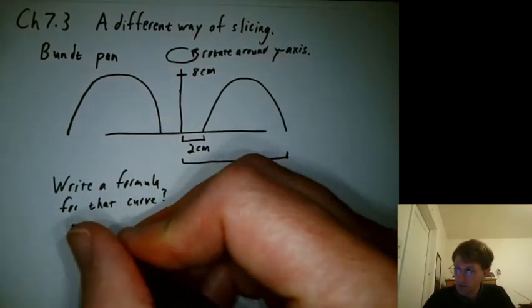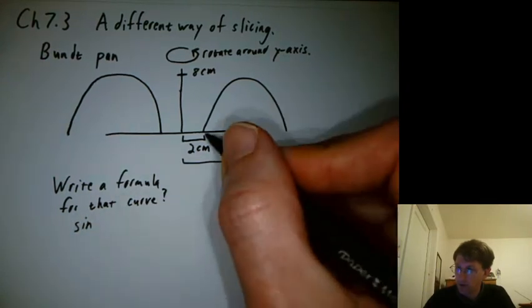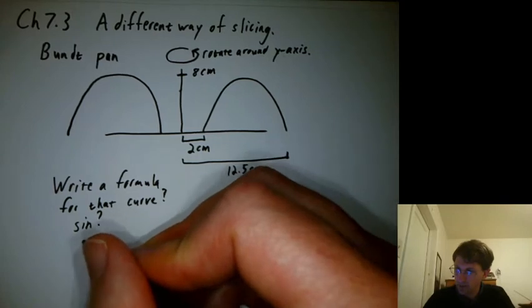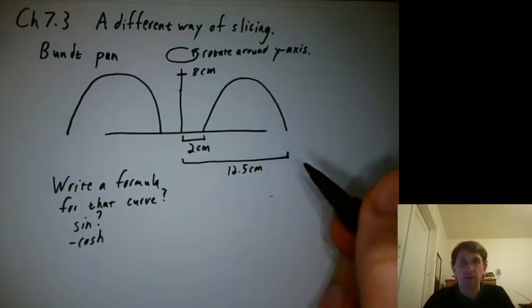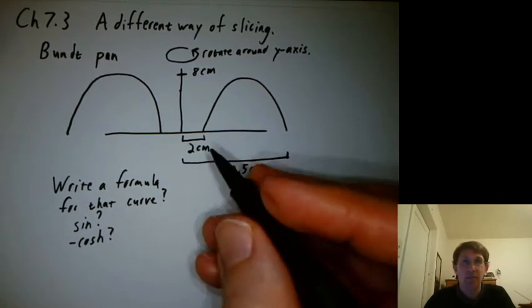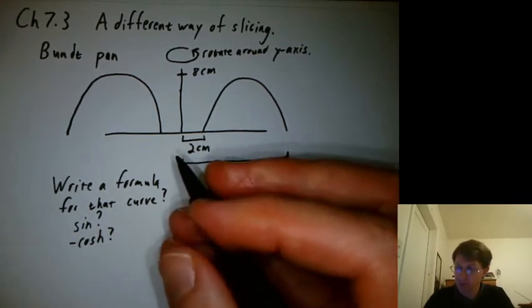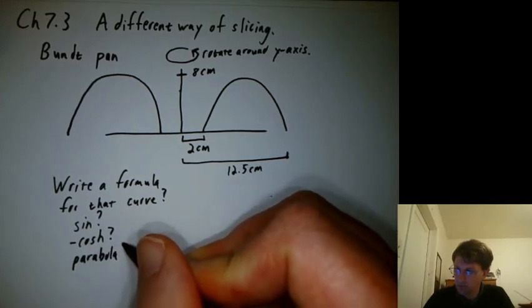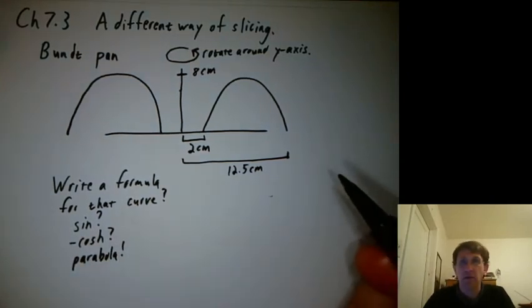When I've done this in class, people have suggested maybe a bump of a sine wave. It seems reasonable. Someone once suggested a negative hyperbolic cosine, which could be fun. I would maybe go with a parabola.